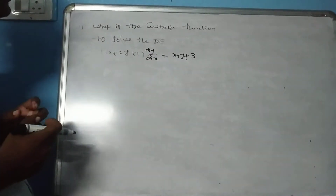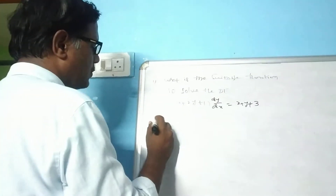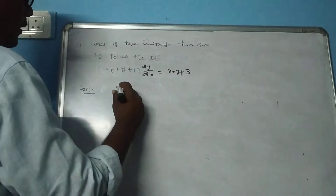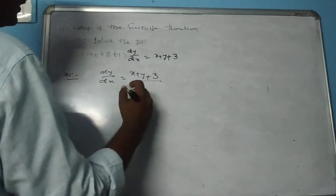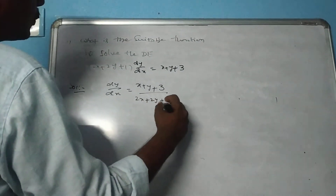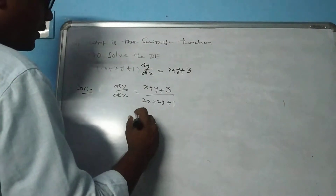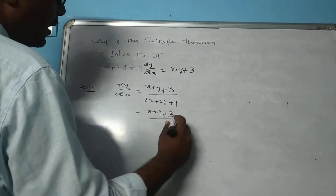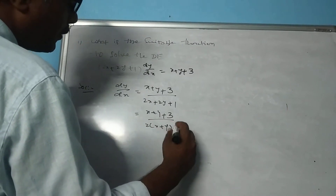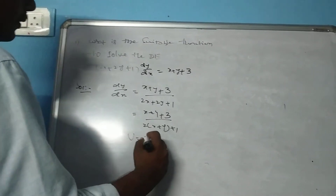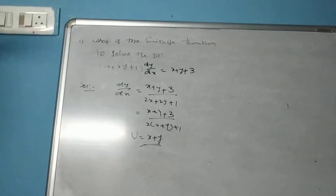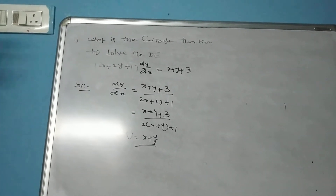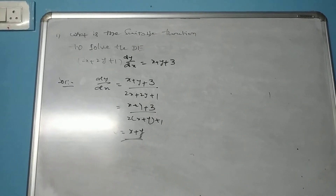For the equation dy/dx equals (x + y + 3) divided by (2x + 2y + 1): these two lines are parallel to each other. Therefore, u equals x plus y is the suitable substitution to solve this differential equation.